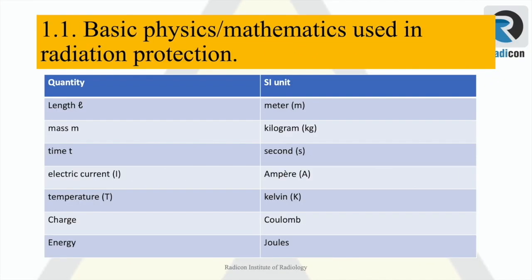These are a few of the base units used in basic physics and mathematics for radiation calculations: length as meter, mass as kilogram, time in seconds, electrical current as amperes, temperature as kelvin, amount of charge as coulomb, and finally energy measured in joules.